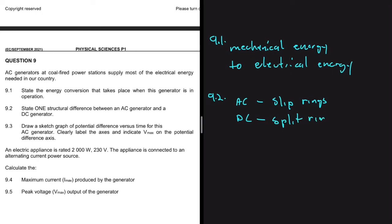And then for AC, like we're saying, we have slip rings. So make sure you find a way to differentiate between the two. AC slip rings. And then DC split ring.